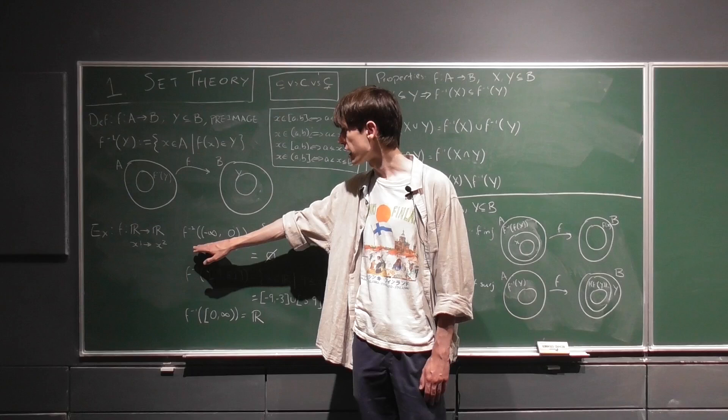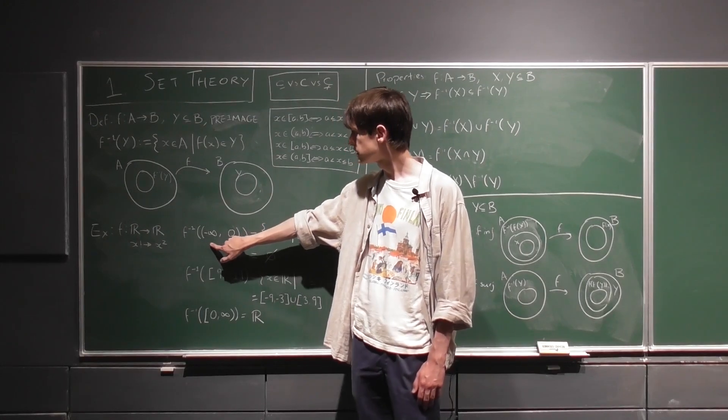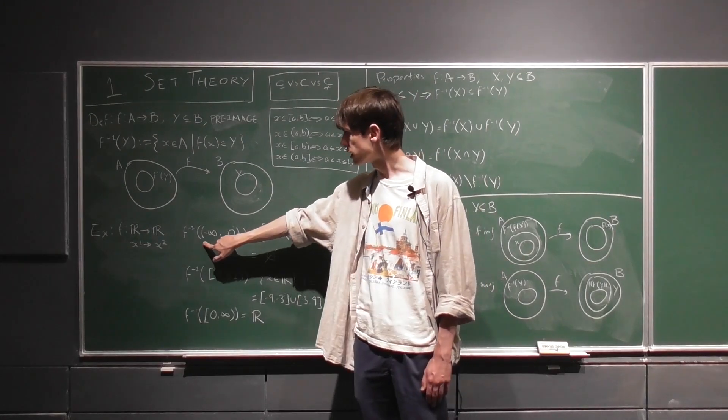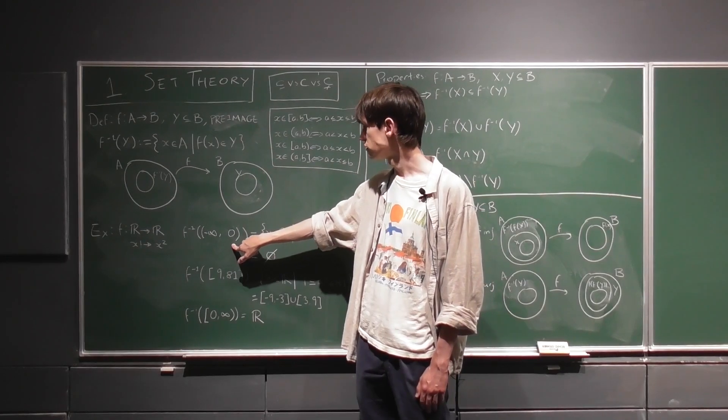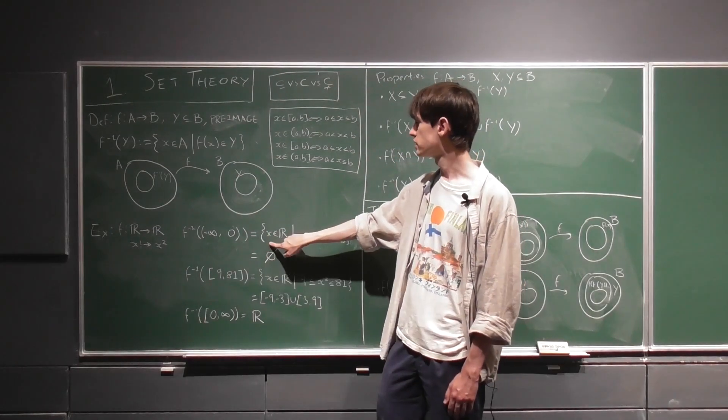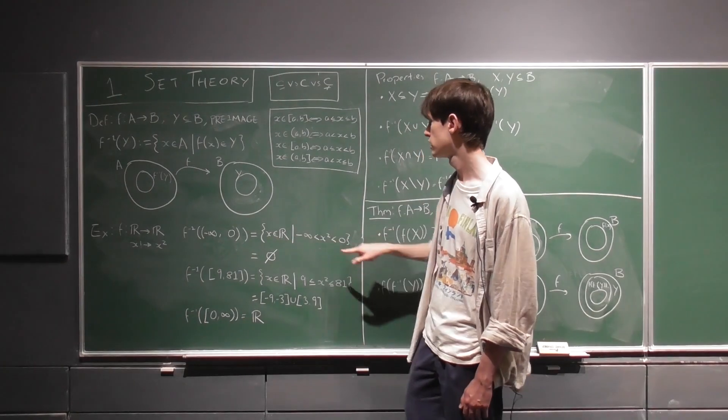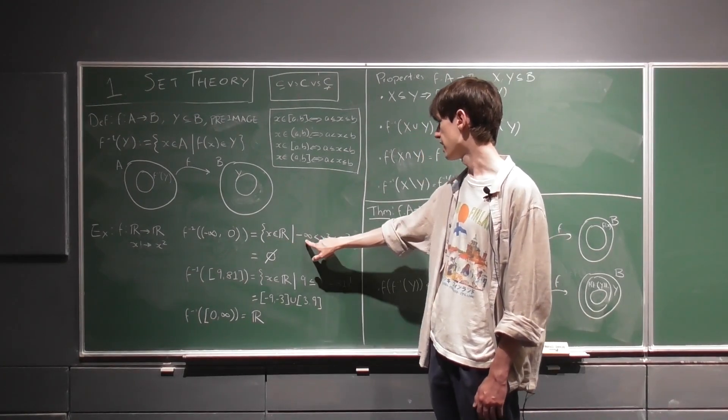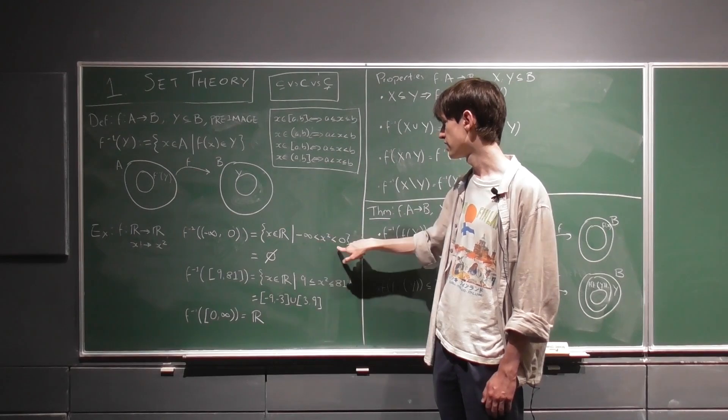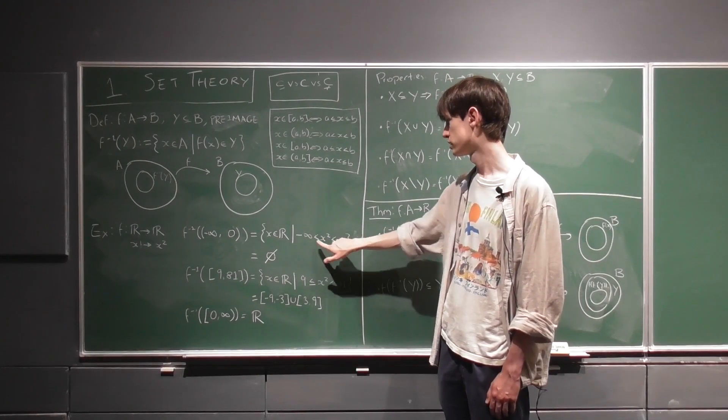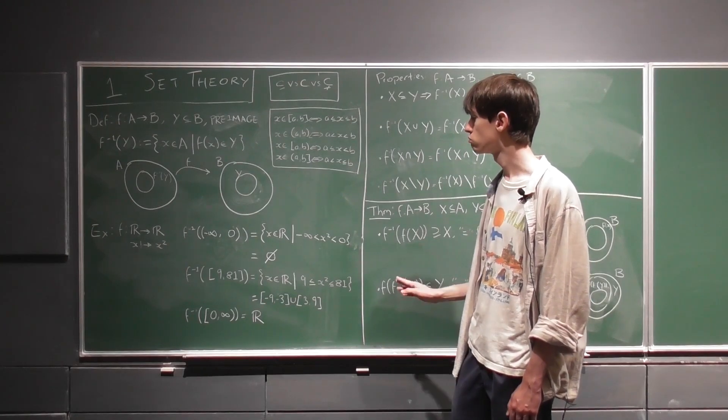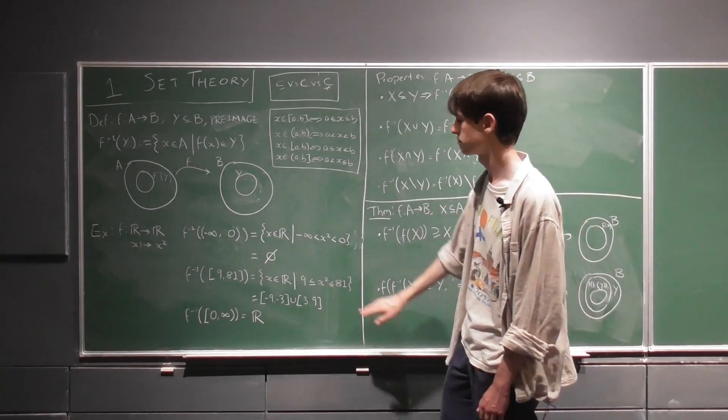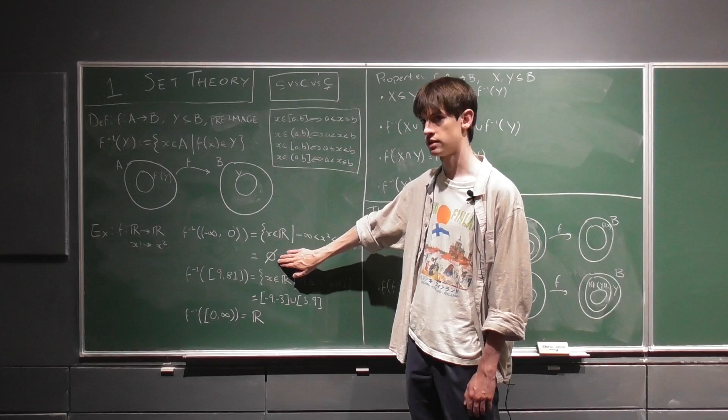So we can look at the pre-image of a few different subsets of the real numbers to see what they look like under f. So if we took this open interval here from minus infinity to 0, the pre-image of that would be all the real numbers such that x squared lies between negative infinity and 0 with strict inequalities. As we said before, there is no real number that satisfies this. So it's just the empty set here, the null set.